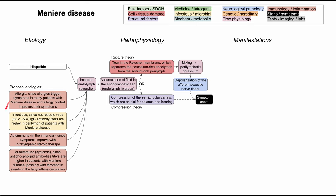It's possible that it's an infectious etiology. Neurotropic viruses — specifically herpes simplex and varicella zoster virus — have IgG antibody titers that are higher in the perilymphatic fluid of patients with Meniere's disease. So it's possible that some infectious etiology from having these viruses is what triggers Meniere's disease.